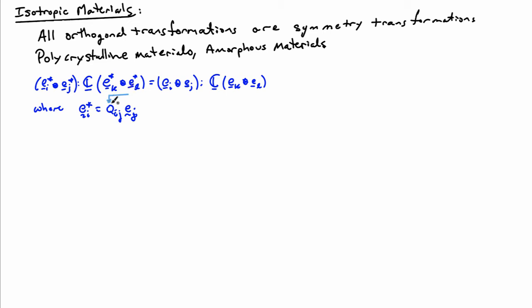If you use those symmetry transformations in this relationship between a basis with E_i or E_j, and use this relationship to generate a second star basis, then you necessarily have to have this interrelationship between the components. Now I can rewrite the relationship E_i* equal to Q_ij E_j, noting that Q_ij are the components in the unstar basis. I can write this as E_j* equal to Q transpose times E_j — that's just going to be a convenience — and I'll plug that back into this relationship.